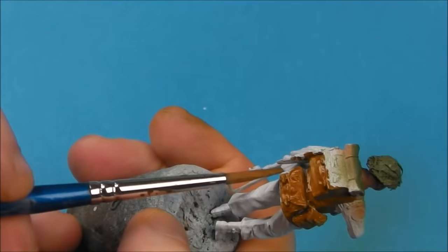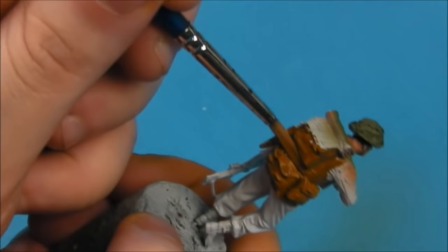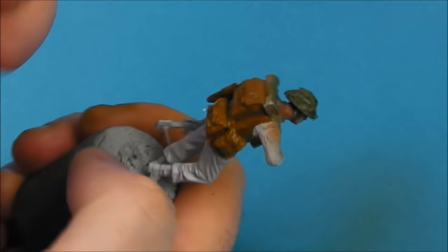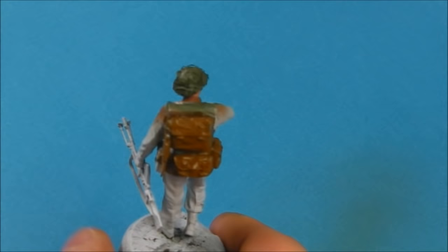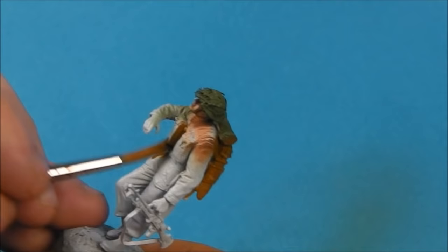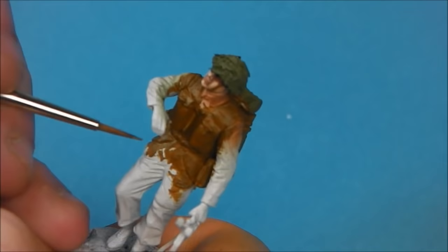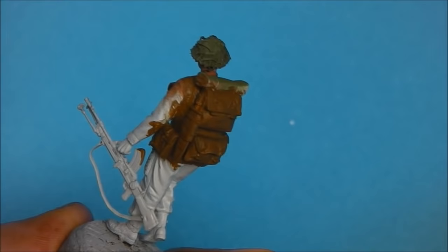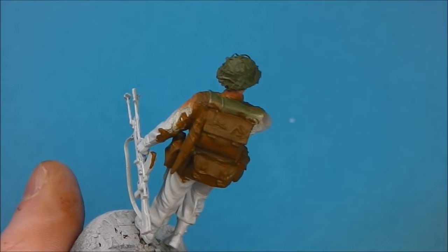However, I will have to switch down to some smaller brushes as we get into the more finer details of this figure. I'm going to switch down to a number two brush here and pick out some of the more hard to reach details. I don't want any of the white primer showing through, or the light grey primer showing through. I'm just going to take my time with a small brush to ensure I have a good solid base coat.